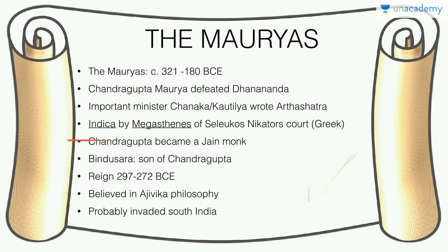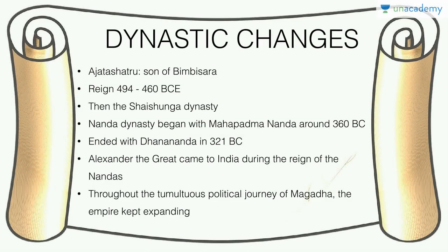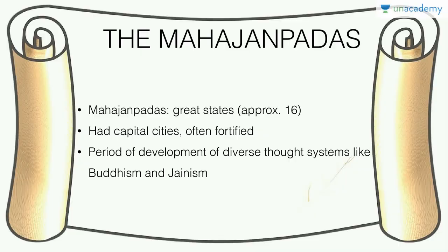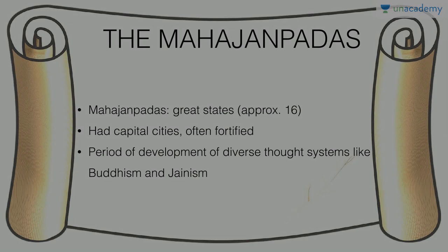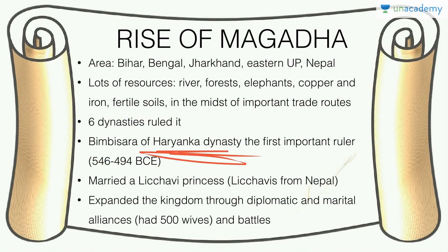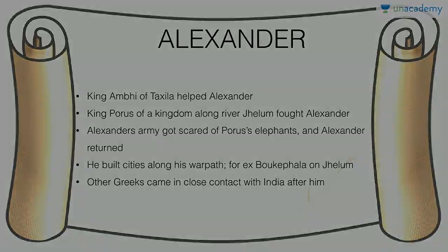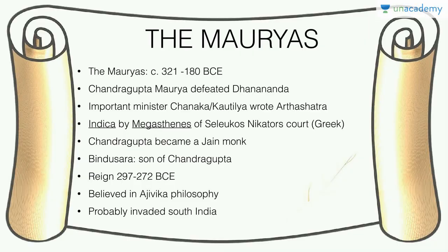Chandragupta became a Jain monk and was succeeded by his son Bindusara. Don't confuse Bimbisara — the first important ruler of Magadha from the Haryanka dynasty — with Bindusara, who is the son of Chandragupta Maurya.